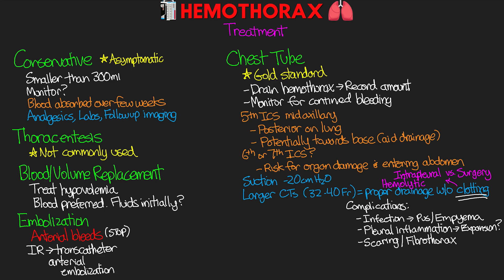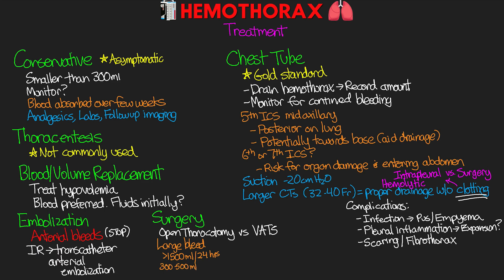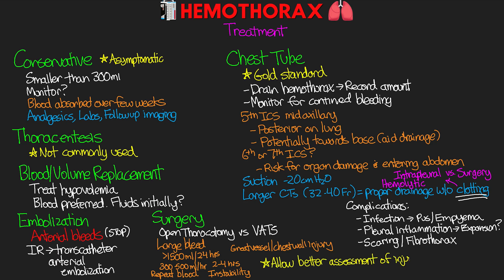The last treatment option is surgery. In a decent number of traumatic hemothoraces, surgery is often going to be required — either an open thoracotomy or a video-assisted thoracoscopy, a VAT. Indications include a large volume bleed of more than 1500 mLs in 24 hours, 300 to 500 mLs per hour for two to four hours post chest tube placement, repeated blood transfusions, hemodynamic instability, or great vessel and chest wall injuries. A thoracotomy allows better assessment of the injury, better manipulation and control of bleeding, and the blood is evacuated with a chest tube placed post-surgery.